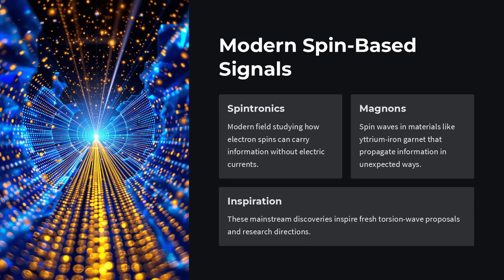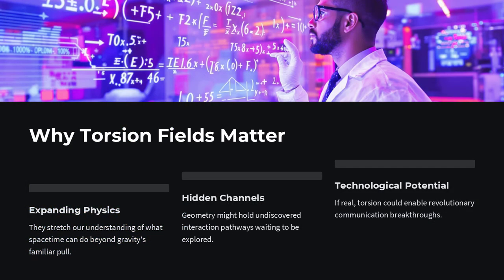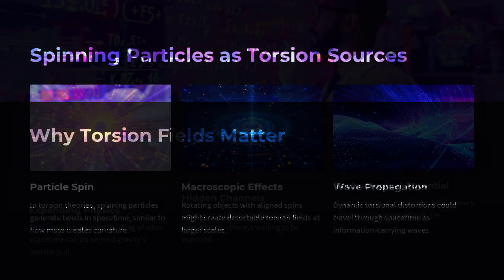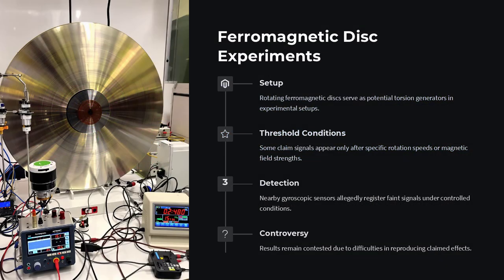Torsion linked to the spin of particles and rotating bodies. How would torsion waves carry information? Proponents imagine encoding data by modulating the spin rate or orientation of a torsion generator, say a magnetized rotor, so that the resulting space-time twist oscillates like a carrier wave.